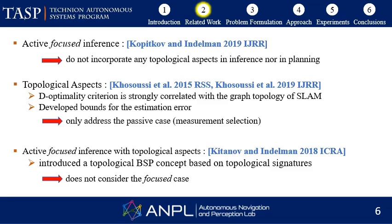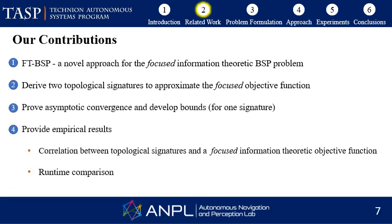Neither of them consider the focused case, which presents an additional challenge. In this work we present FTBSP, a novel approach for focused information theoretic belief space planning problems. We specifically derive two topological signatures to approximate the focused objective function, develop bounds on the estimation error for both signatures, and prove that one such signature asymptotically converges to the true optimal solution. We demonstrate our approach in both passive and active scenarios and compare runtimes to show the merits in terms of computational complexity.